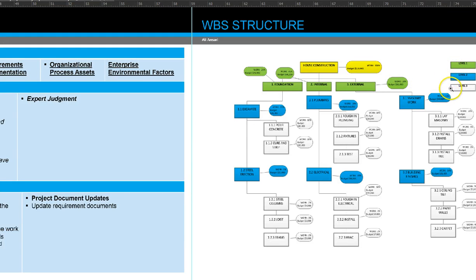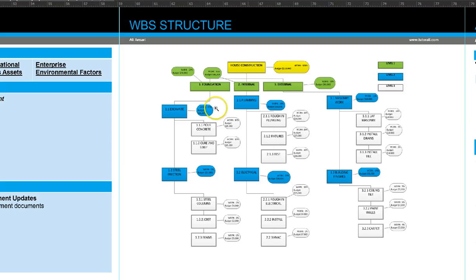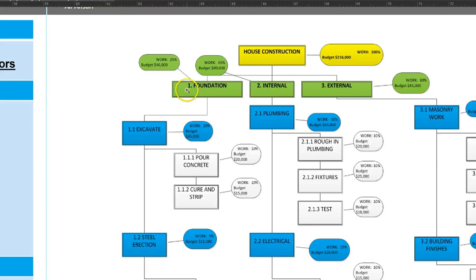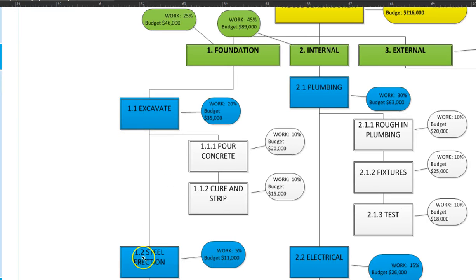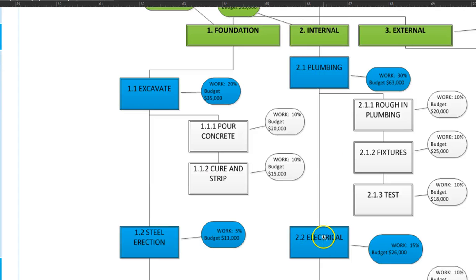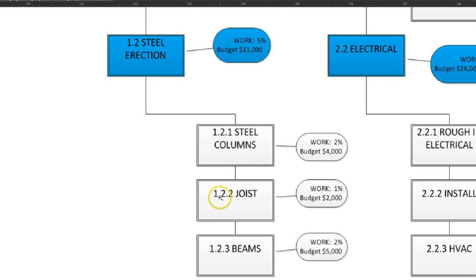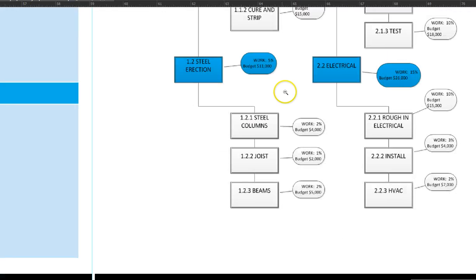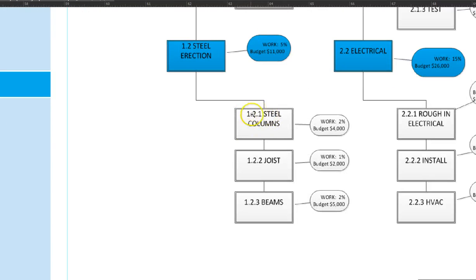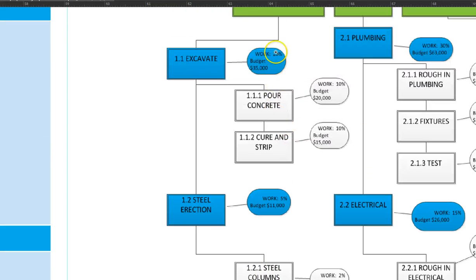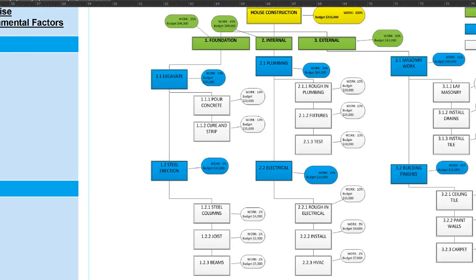In this example we have three levels; it could be four depending on how detailed your project is. These are numbered accordingly: level one uses a single digit (1, 2, 3), level two uses two numbers (1.1, 1.2, 2.1, 2.2), and level three uses three numbers (1.2.1, 1.2.2, 1.2.3). Just by looking at the numbers you immediately know which level of the work breakdown structure you are on.